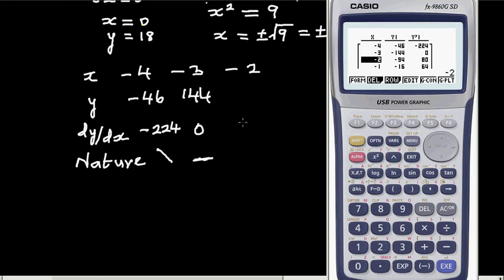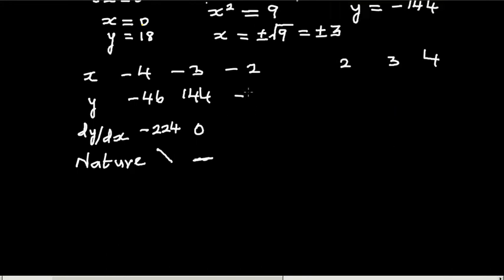You got a negative gradient, zero gradient, and then you're going to get a positive gradient at minus 2. And the y value at minus 2 is 80, and then you got a positive gradient. That means this is minimum.